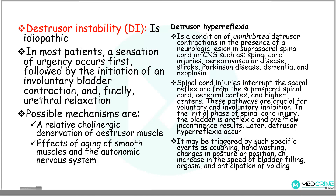Examples of neurologic causes include spinal cord injury, Parkinson's disease, dementia, and neoplasias or cancers. A spinal cord injury interrupts the sacral reflex arc from the suprasacral spinal cord, cerebral cortex, and the higher centers. This pathway is normally crucial for the voluntary and involuntary inhibition of urination. In the initial phase of spinal cord injury, the bladder is usually areflexic and overflow incontinence occurs. But later on, detrusor hyperreflexia will occur.